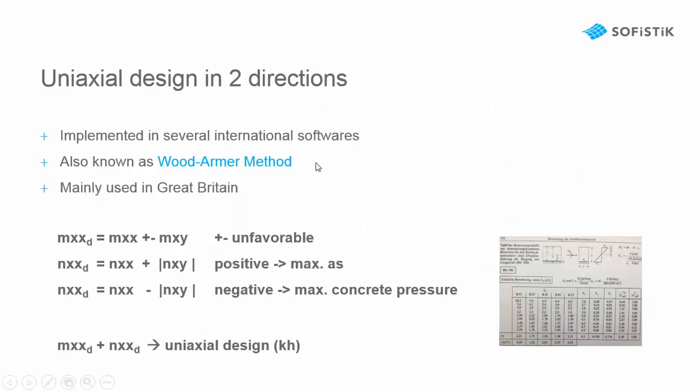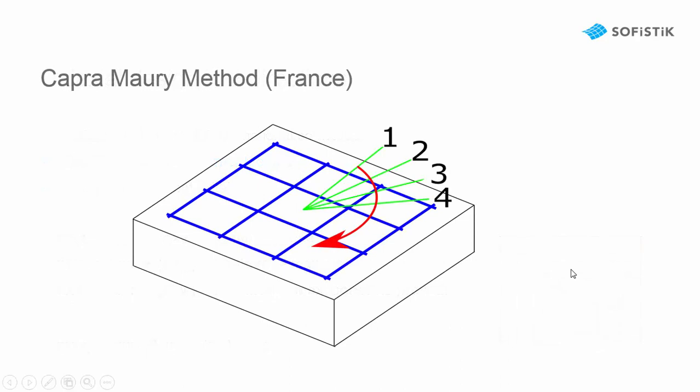The next method is the Wood-Armor method. This is mainly a uniaxial design in two directions where the bending moment Mxx is increased by the Mxy unfavorable so that it gets bigger. On the normal force side we can increase the normal force to get a maximum reinforcement or use a negative sign to get a maximum concrete compression. Then these forces are simply designed with a uniaxial design.